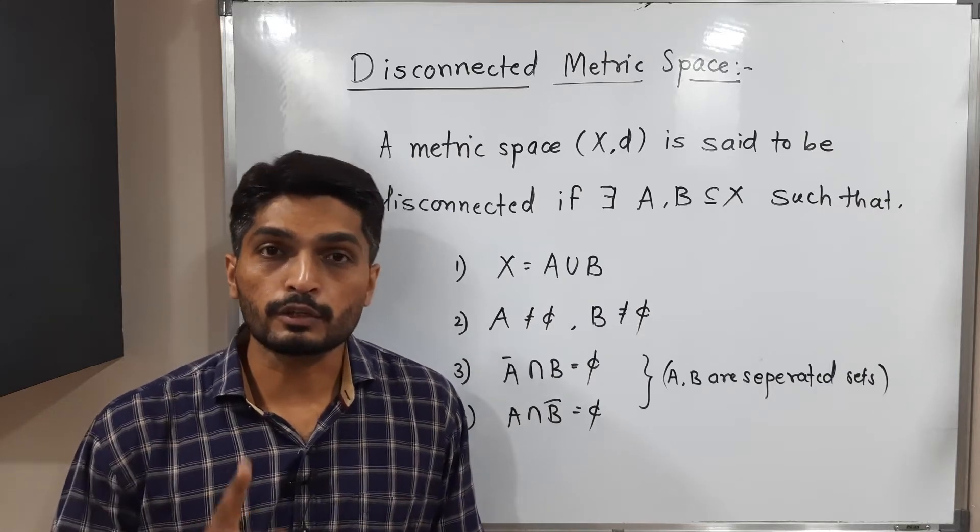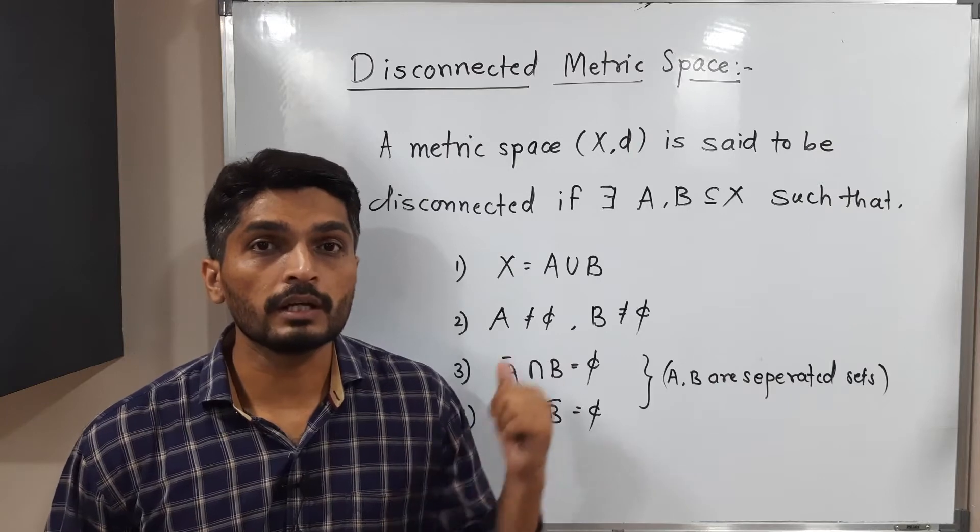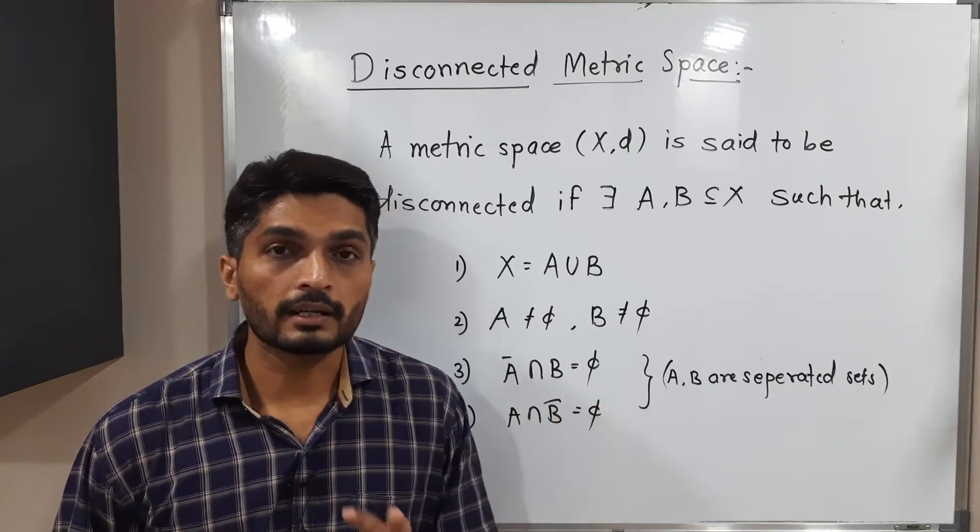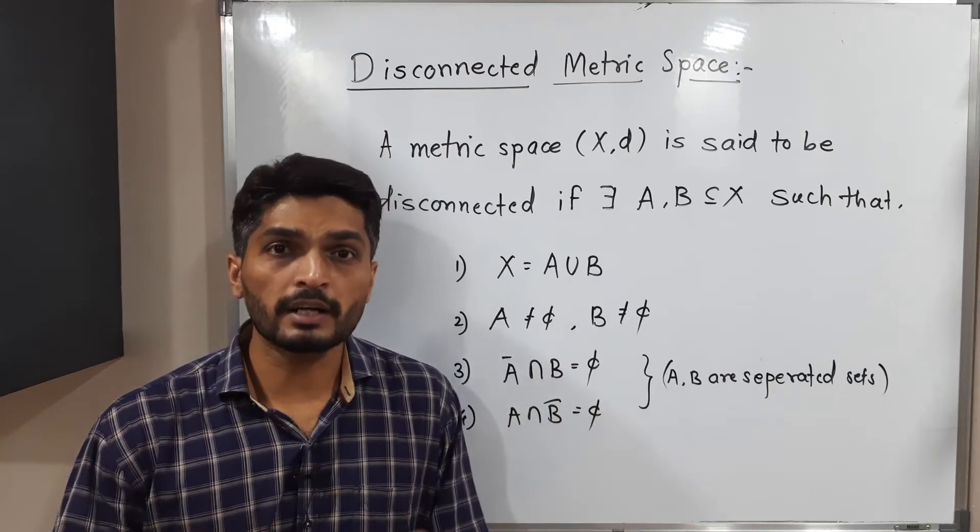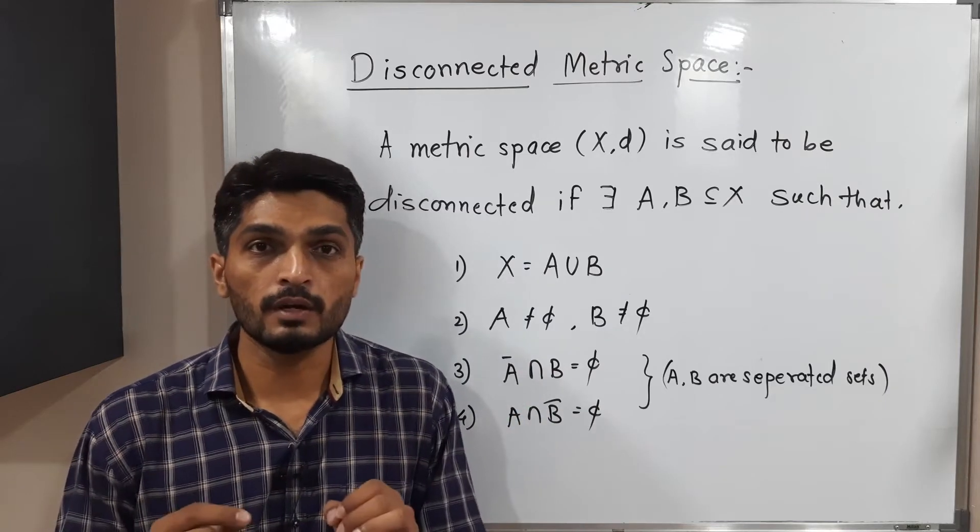The first condition is their union should be X. Second condition is none of them should be non-empty. And the last two conditions are A bar intersection B is equal to phi and A intersection B bar is also equal to phi.